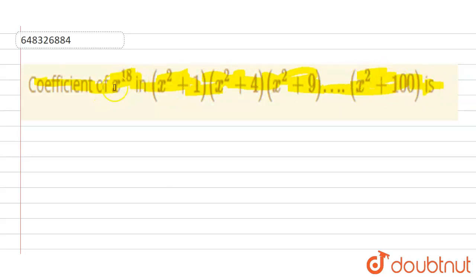We need to find the coefficient of x raised to power 18. So coming to the solution, as we have x raised to power 20 plus x raised to power 18 into 1 plus 4 plus 9 plus up to so on plus 100.